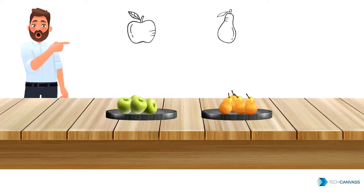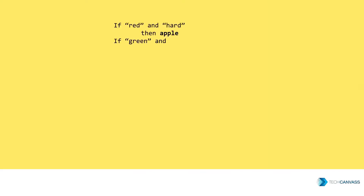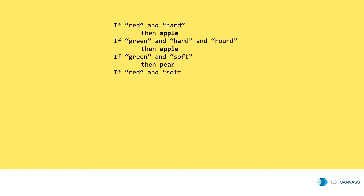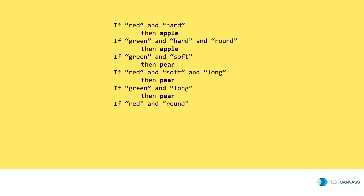Other parameters like shape, hardness, etc. have to be defined. Complex if-else statements would be needed. But in machine learning, we want the machine to learn and apply this learning without being explicitly programmed.